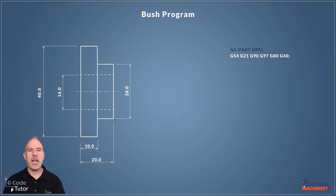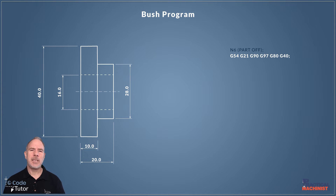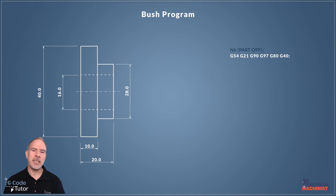G97 sets the machine to standard RPMs, so if we put in 2000 RPM the spindle will accelerate to that. G80 cancels any active cycles that may be in the machine — so if we've just been doing a roughing cycle and stop halfway through and decide to part off, that cycle will no longer be active. G40 cancels any cutter compensation.